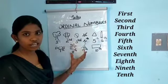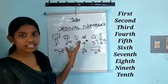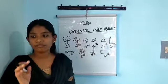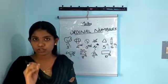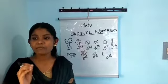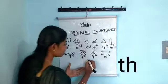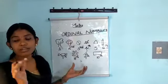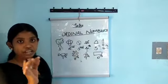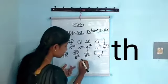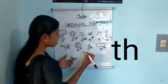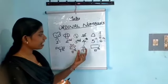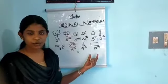You have to study all of these positions. Whenever we mention a number as a position, we will be adding 'TH' at the end — like 4th, 5th, 6th, 7th, 8th, 9th, 10th. Do you understand children?